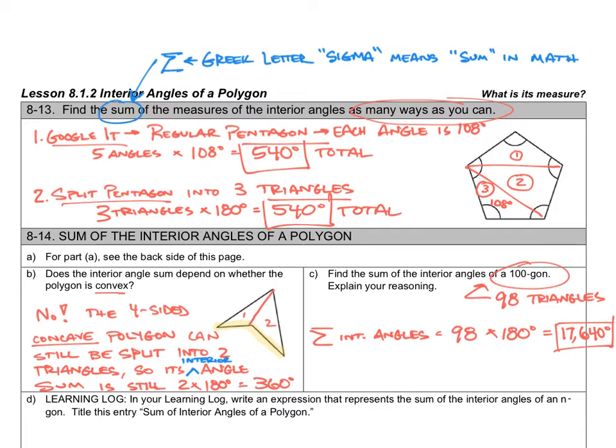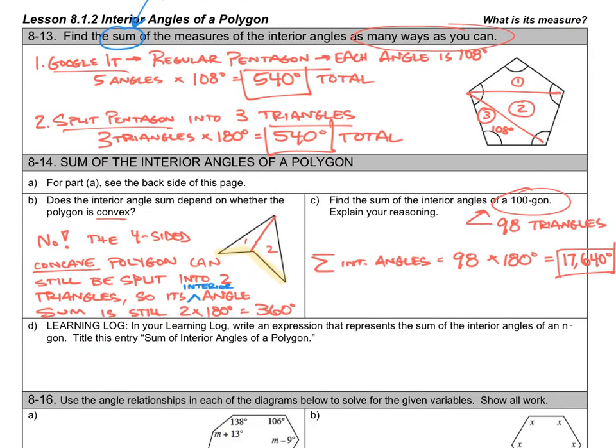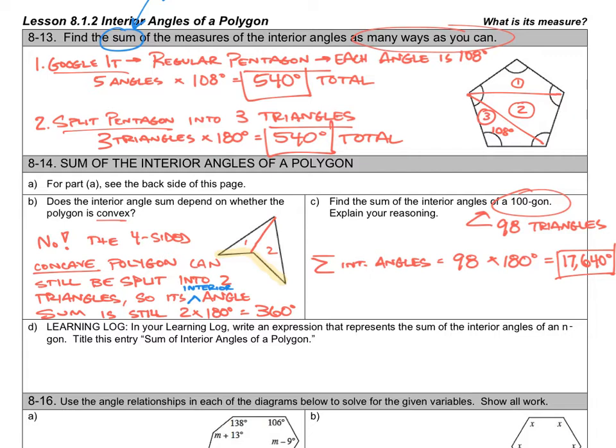Okay, let's move on down now to part D. Learning log. In your learning log, write an expression that represents the sum of the interior angles of an n-gon. Remember n represents the number of sides in the polygon. We're not going to do that in our learning log because I've provided you some space right here in the notes to do that. Sum of the interior angles is equal to 180 degrees times the number of sides minus 2. And that's the formula for the interior angle sum of a polygon. Remember that n equals the number of sides. N minus 2 is the number of triangles.